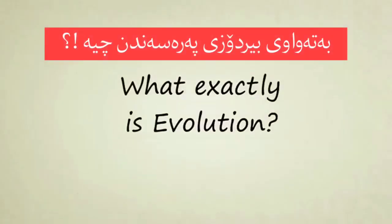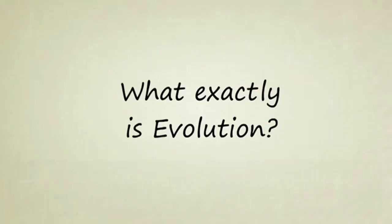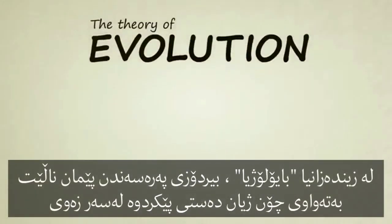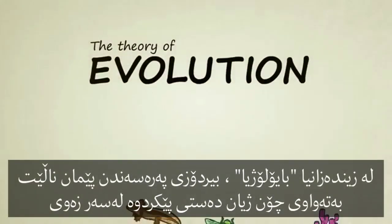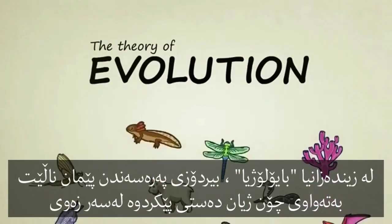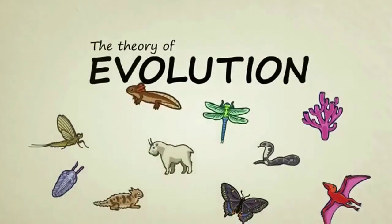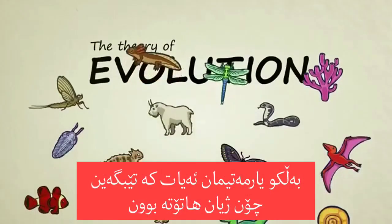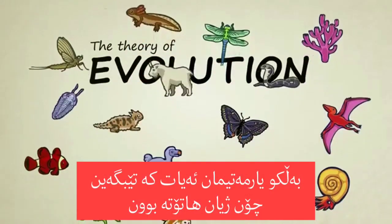What exactly is evolution? In biology, the theory of evolution doesn't tell us exactly how life began on Earth, but it helps us understand how life, once it came into existence, diversified into the many incredible forms we see now and in the fossil record.